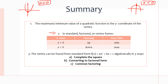Lastly, the vertex can be found from standard form f(x) equals ax squared plus bx plus c algebraically in three ways: completing the square, converting to factored form, and common factoring. We used two of these methods — in the second example we used factored form and common factoring, and in the first example we just used completing the square. We use these methods to find our vertex, and we figure out if the parabola is opening upwards or downwards, and that's how we find our maximum or minimum values.